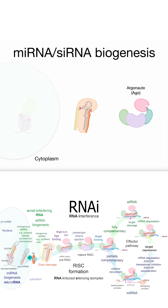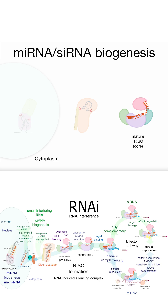You can also have exogenous siRNA duplexes come in here. These RNAs are going to get loaded into the protein Argonaute to form the pre-RISC, or RNA-induced silencing complex. Argonaute is going to release one of the strands, the passenger or star strand, and maintain the guide strand to form the mature RISC with the seed sequence exposed.